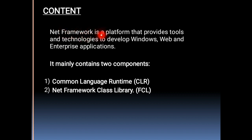The .NET Framework is a platform that provides tools and technologies to develop Windows, web, and enterprise applications. It mainly contains two components: first, Common Language Runtime (CLR), and second, .NET Framework Class Library (FCL). CLR and FCL are the most important core components of the .NET Framework because they provide tools and technology to develop web, window, and enterprise applications.